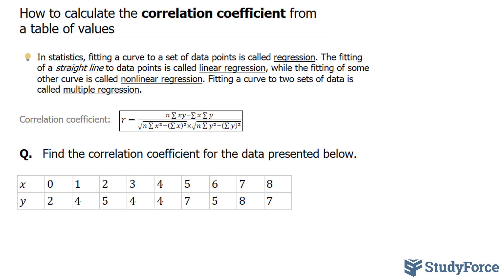What you want to do is create a table with 5 columns. In the first column, you'll write down all of your x's, 0 through 8. In the second column, your y values.